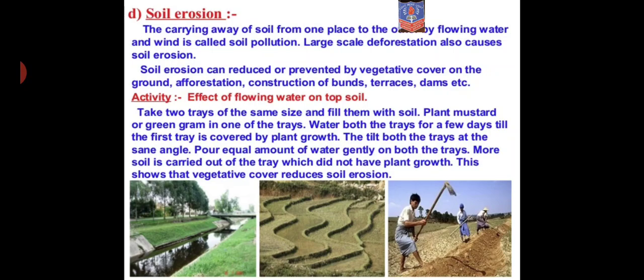Soil erosion can be reduced or prevented by vegetative cover on the ground — growing vegetation on fields. The more vegetation you grow, the more you can prevent soil erosion. The second method is afforestation, which is the opposite of deforestation — it means creating new forests by growing more trees.